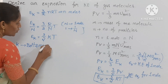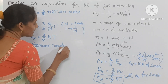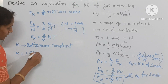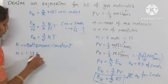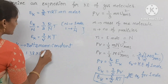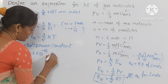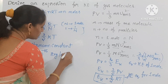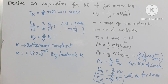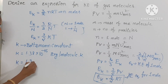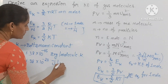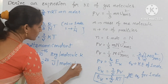K is the Boltzmann constant, having the value K equal to 1.38 into 10 power minus 16 erg per molecule per Kelvin, and also K equal to 1.38 into 10 power minus 23 Joule per molecule per Kelvin.